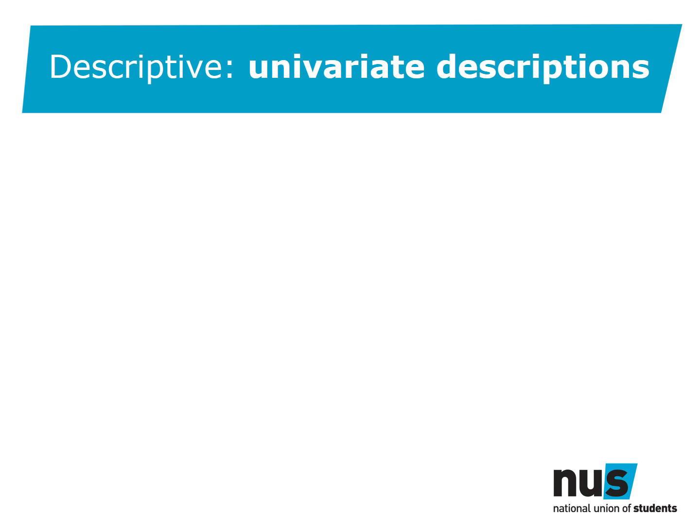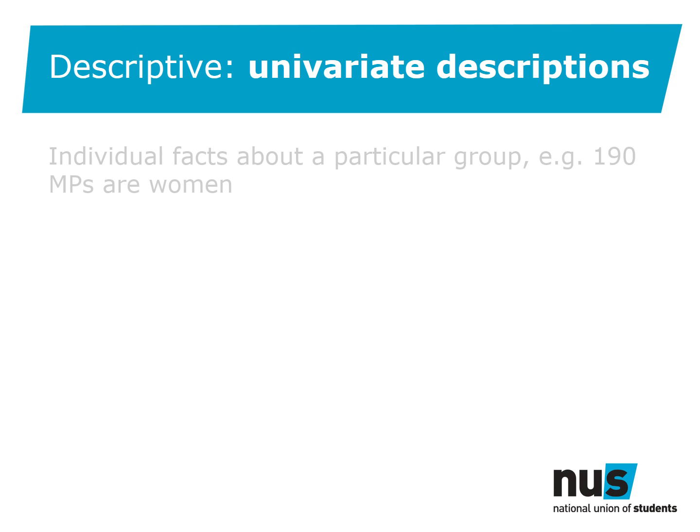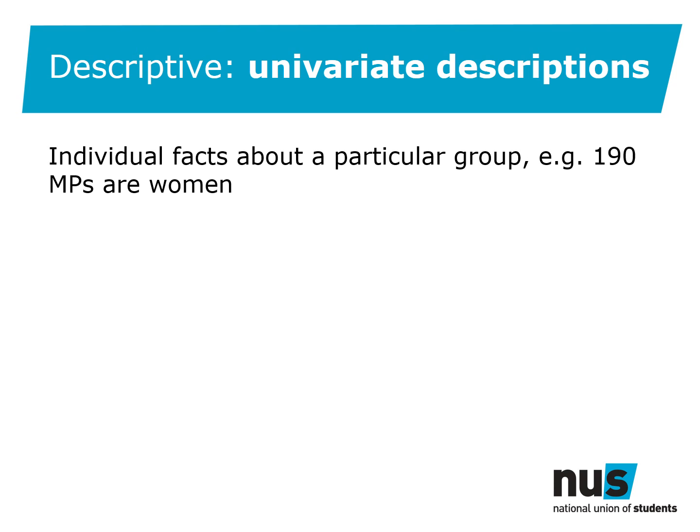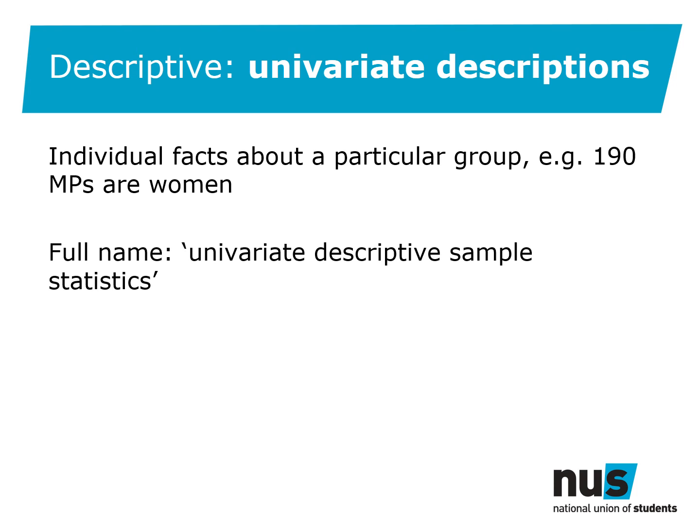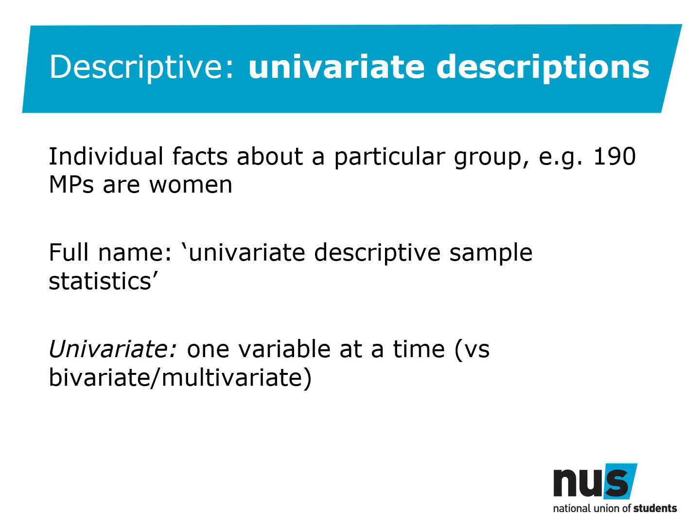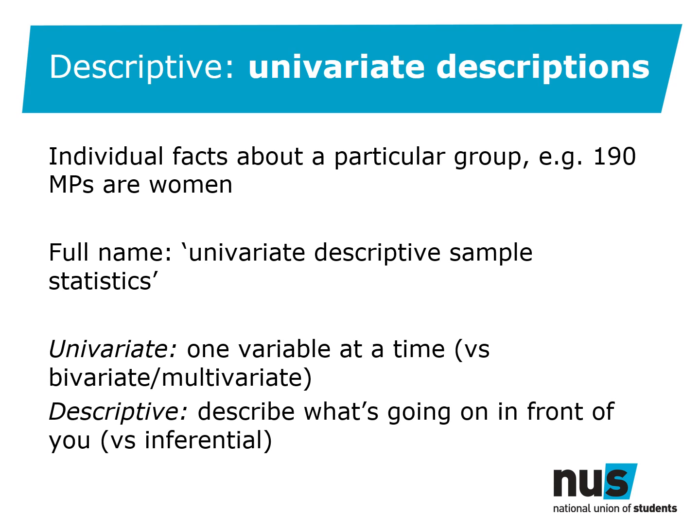An example of a simple descriptive statistic is a univariate description — this is an individual fact about a particular group. For example, the statement '190 MPs are women.' Its full name is univariate descriptive sample statistics. Univariate because you're only looking at one variable — in this case the number of women MPs. Descriptive because it doesn't try to infer anything about the broader population. And sample because it's based on an observed group. A univariate description simply states a fact, with little to contextualise it and nothing to suggest what the reader should make of it.